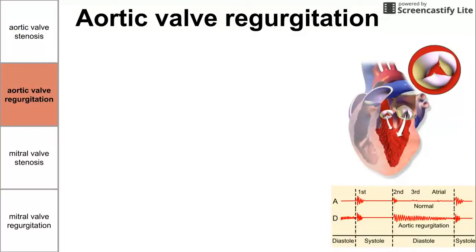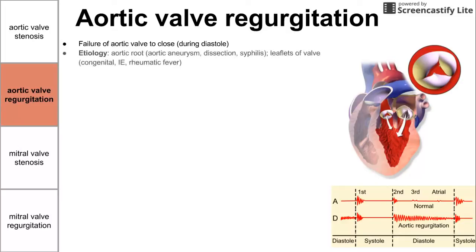Next, we have aortic valve regurgitation. This is defined as the failure of the aortic valve to close during diastole, and thus we have a flow of blood backwards into the left ventricle. As seen in the picture, blood flows back through the aortic valve as well as coming in through the mitral valve. Etiology includes aortic root dysfunction as a result of aortic aneurysm, aortic dissection, and even syphilis infections.